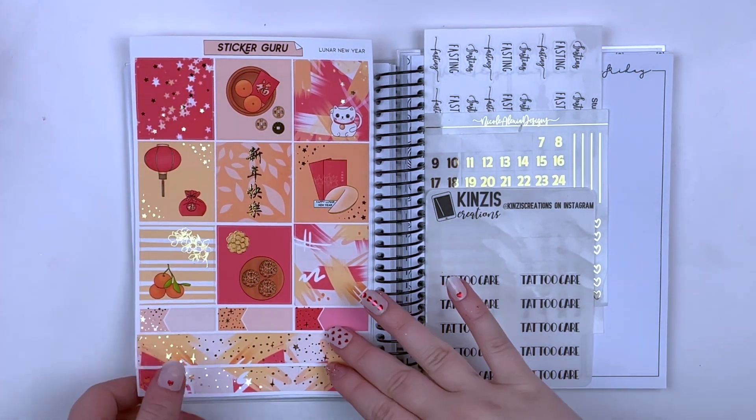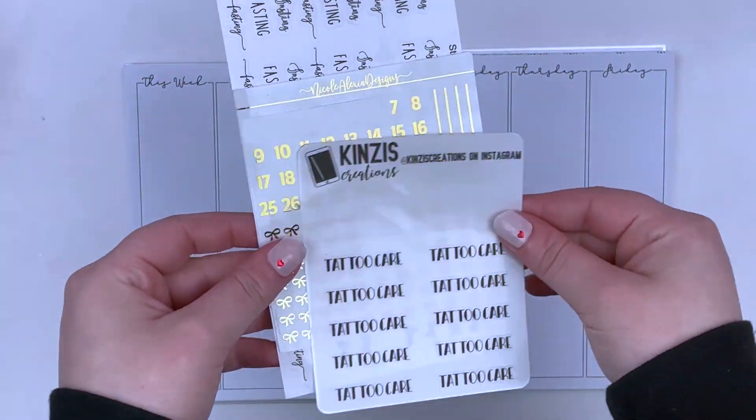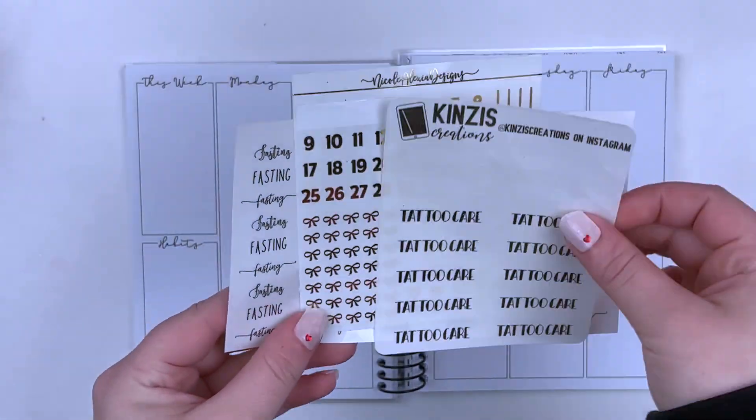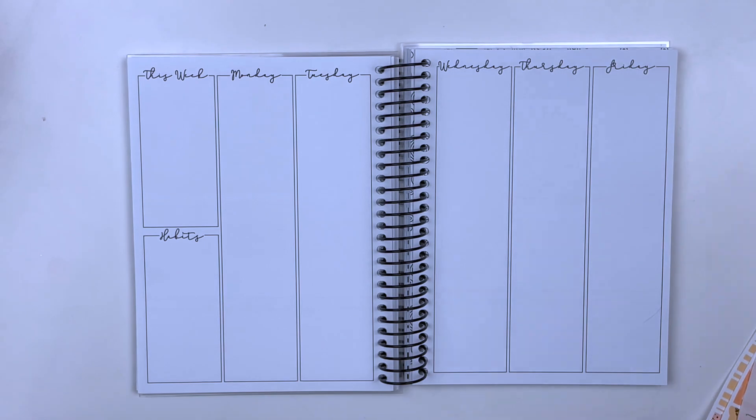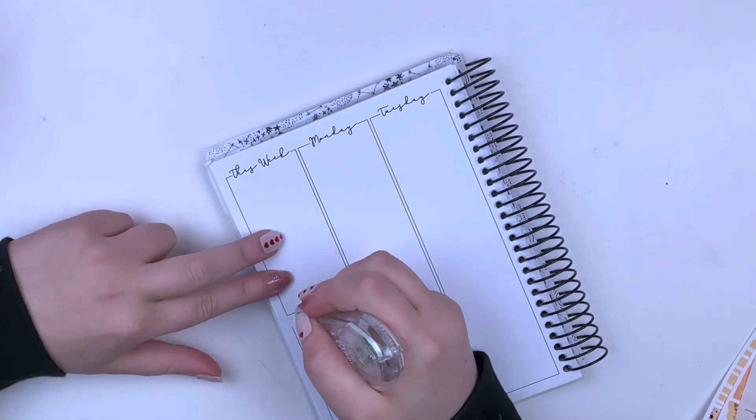Hey everybody, it's Emily. Welcome back to my channel for another B6 planning with me, which is basically just doing the base because this is my personal planner. So I'm using this Lunar New Year kit from Sticker Guru and I'm also pulling in a couple scripts, which you guys saw at the very beginning.